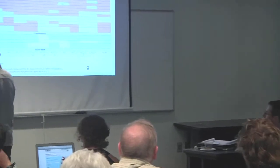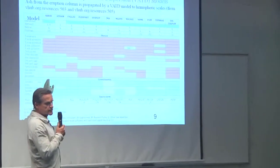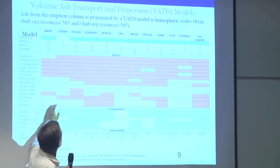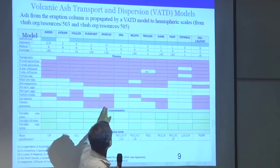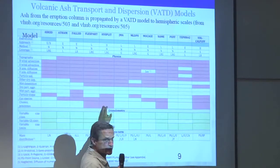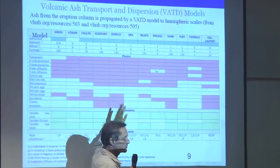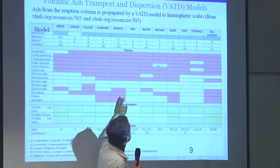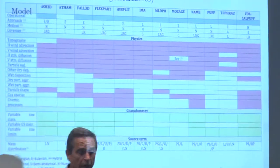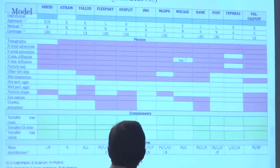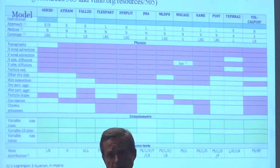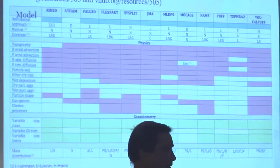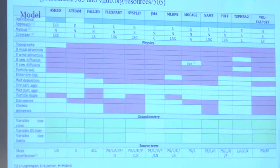It might be helpful to know that a number of these models you can just run online. ASH3D has an online interface. HySplit from NOAA has long had an online interface that you can run with all kinds of wind fields — it's a very good website. PUFF has also had an online website for quite a long time. The others that can't be run through the web can often be downloaded and run on your computer. These are very widely available models.